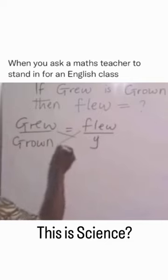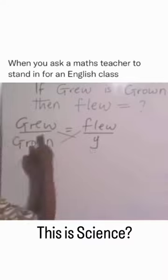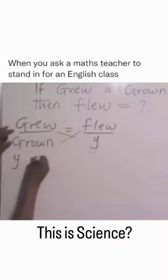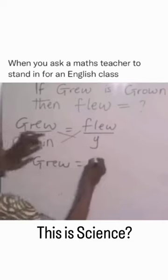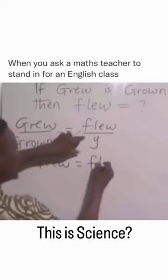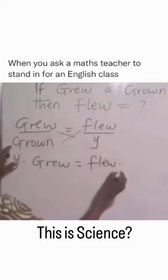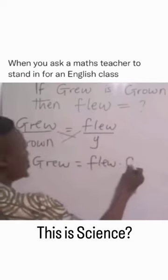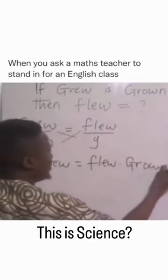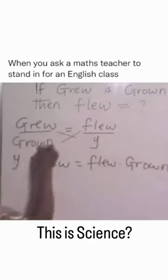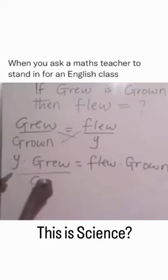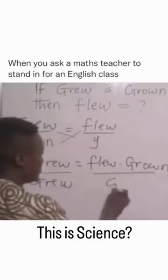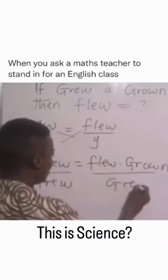Then cross-multiply. Y times grew equals flew times grown. That is cross-multiply. So to get your Y, divide both sides by grew.